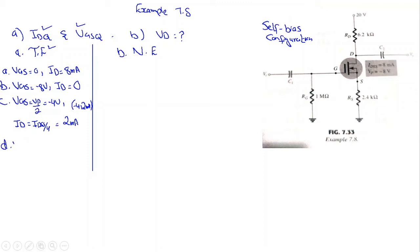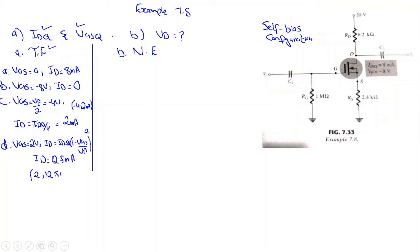We also need to find the drain current for a positive VGS. Taking VGS = +2 volt and substituting into the Shockley equation — ID = IDSS × (1 − VGS/VP)² — we get ID = 12.5 milliampere. So the fourth point is (2 V, 12.5 mA).